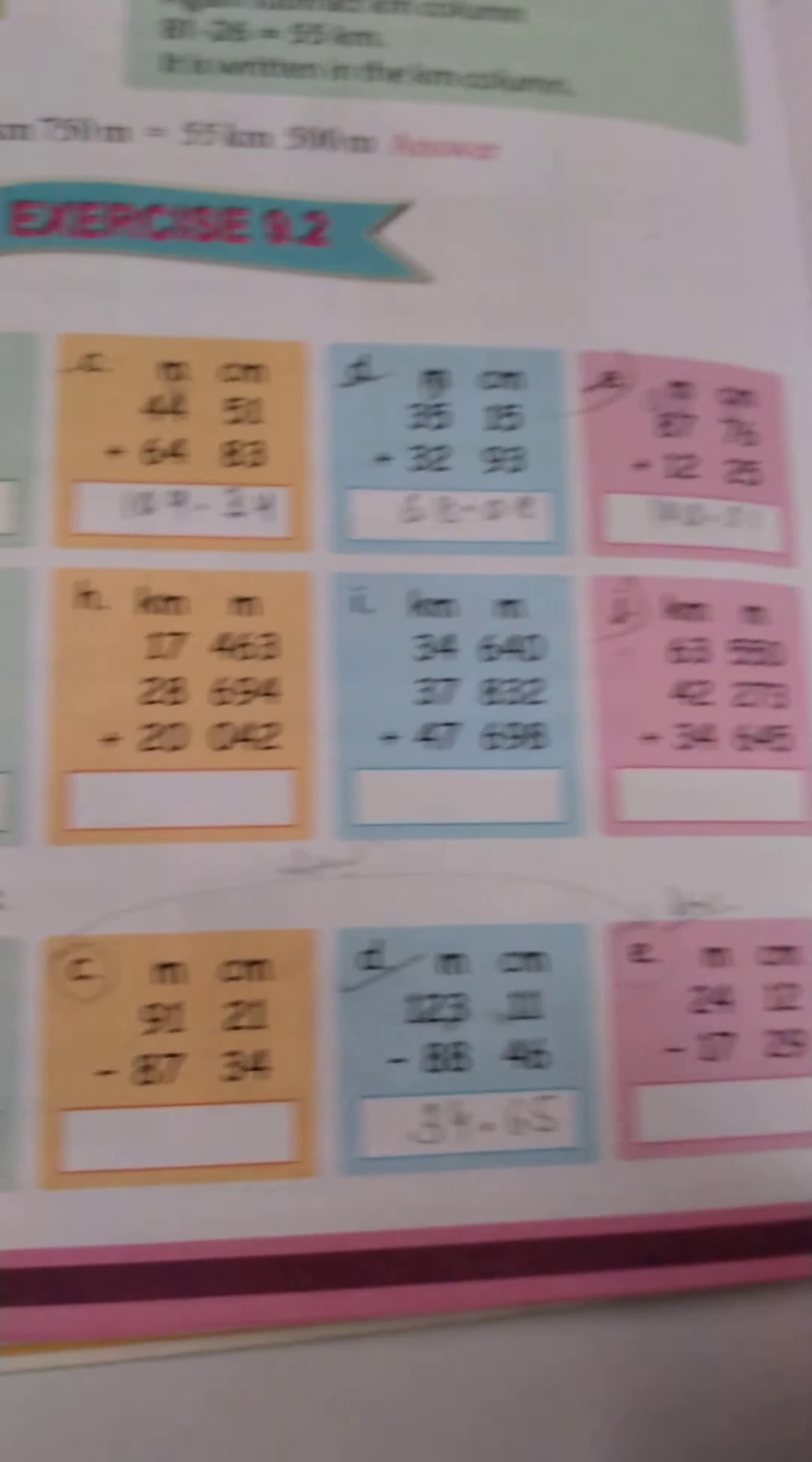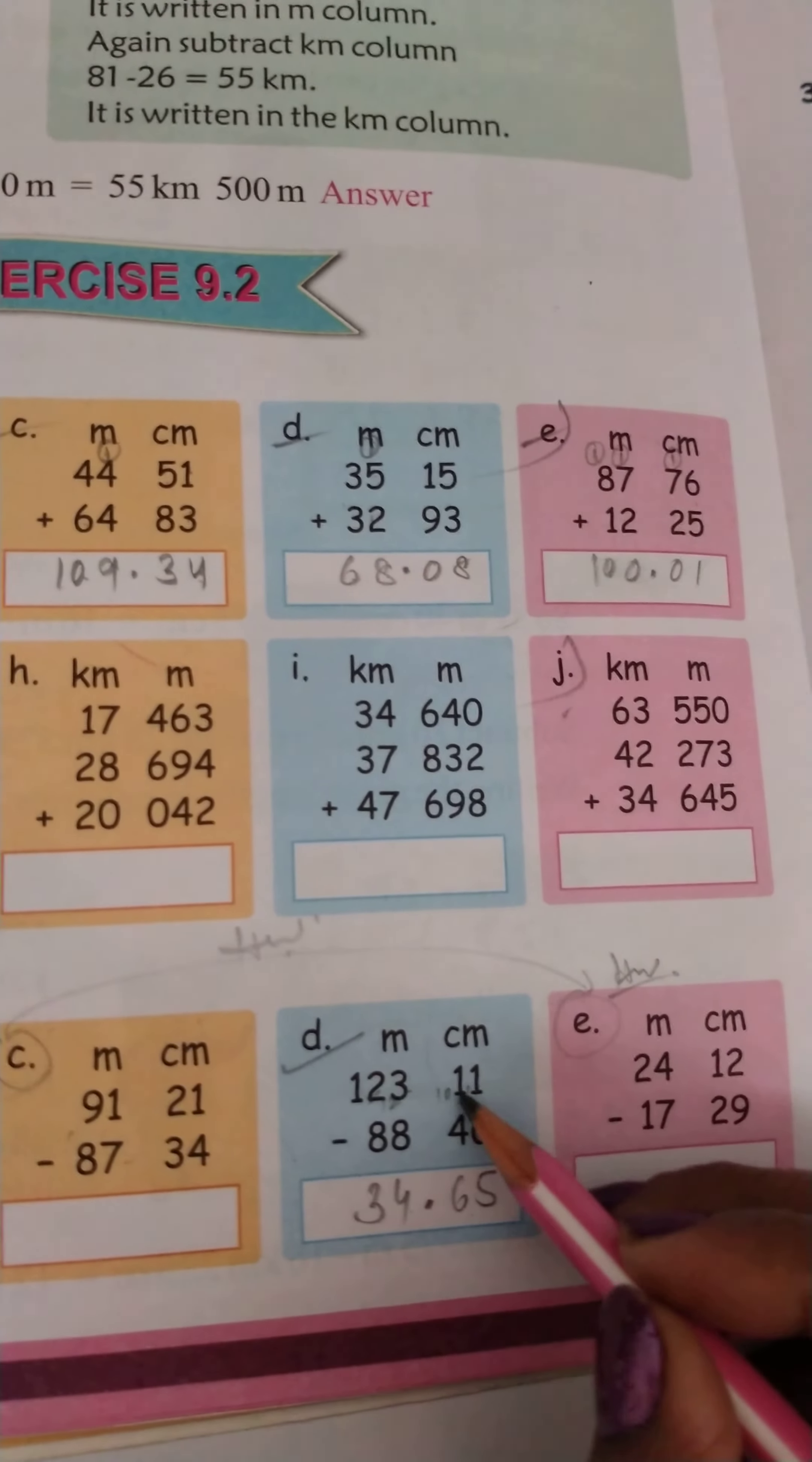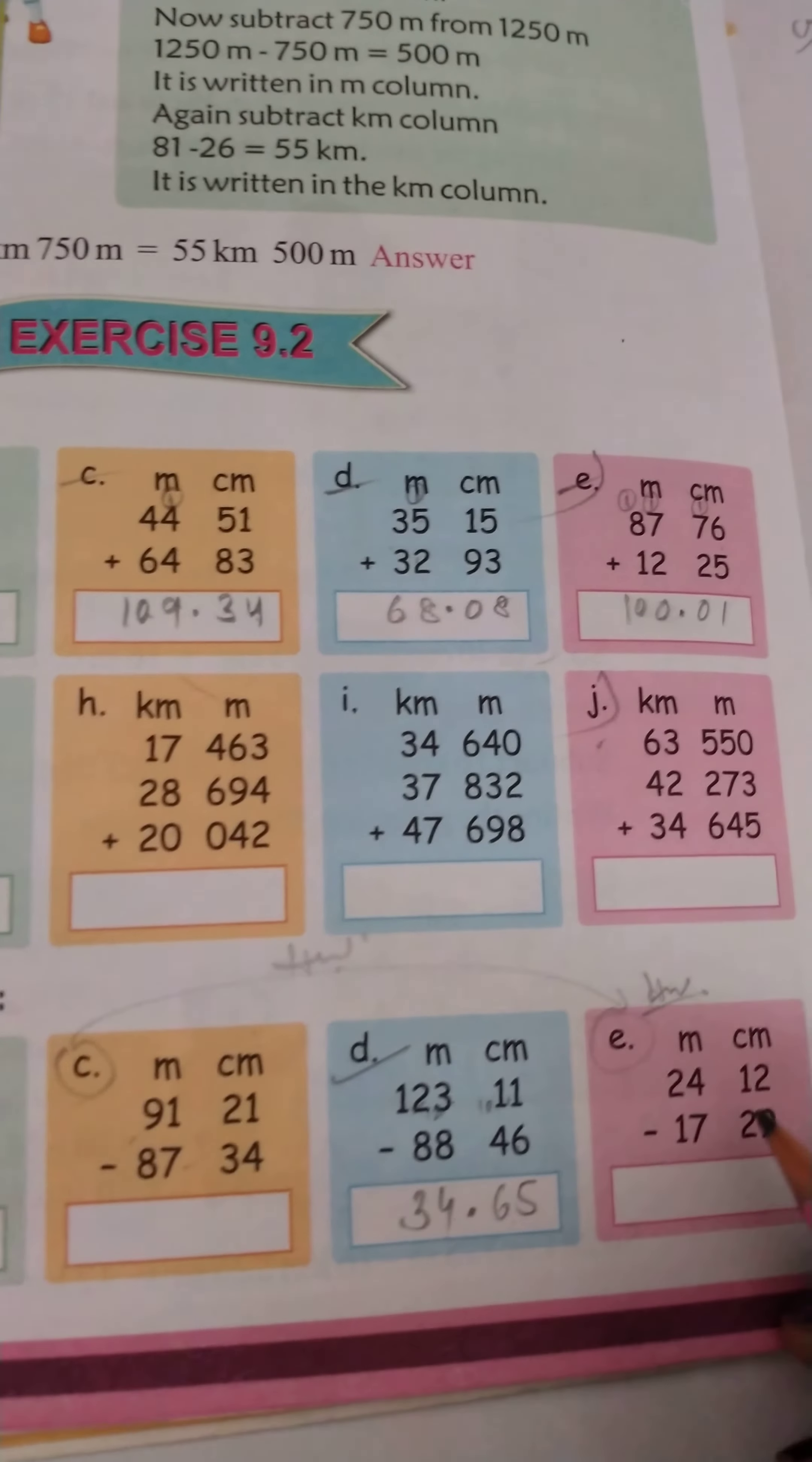C, let's do this. Next one is 11. 11 minus 6 is equal to 5. Here we have 0. 10 minus 4 is equal to 6. Here we have 2. 12 minus 8 is equal to 4. Here we have 1. 11 minus 8 is equal to 3. So 34 meters 65 centimeters.